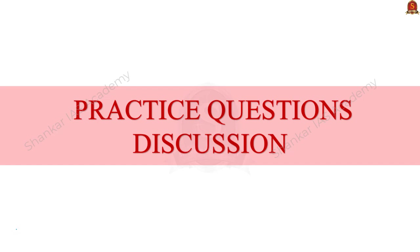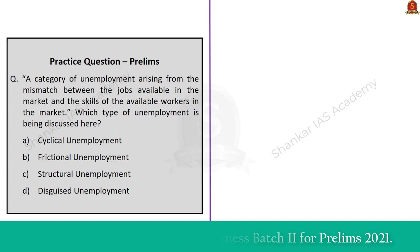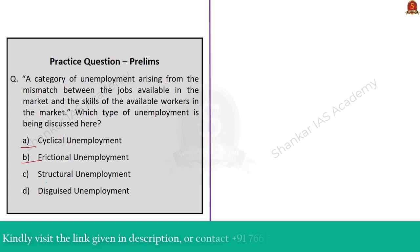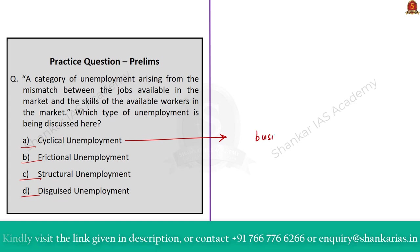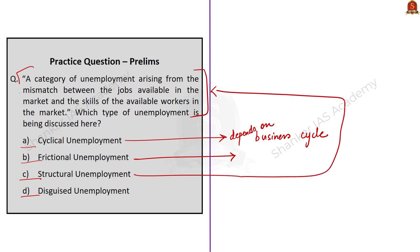Now let us take the practice questions. The first question asks about a category of unemployment arising from the mismatch between jobs available in the market and the skills of available workers. The options are: cyclical unemployment, frictional unemployment, structural unemployment, and disguised unemployment. Cyclical unemployment results from the business cycle, rising during recessions. Frictional unemployment refers to the time lag between jobs when an individual is searching for or switching between jobs. Structural unemployment arises from a mismatch between available jobs and worker skills. Disguised unemployment is a phenomenon where more people are employed than actually needed. The correct answer is option C — structural unemployment.